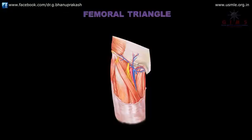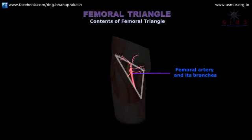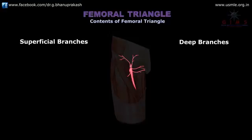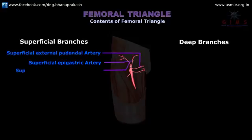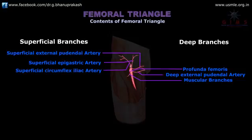The femoral triangle contains the femoral artery and its branches. The femoral artery traverses the triangle from its base to the apex, and in the triangle it gives off six branches — three superficial and three deep. The three superficial branches are the superficial external pudendal artery, the superficial epigastric artery, and the superficial circumflex iliac artery. The three deep branches are the profunda femoris artery, the deep external pudendal artery, and muscular branches.